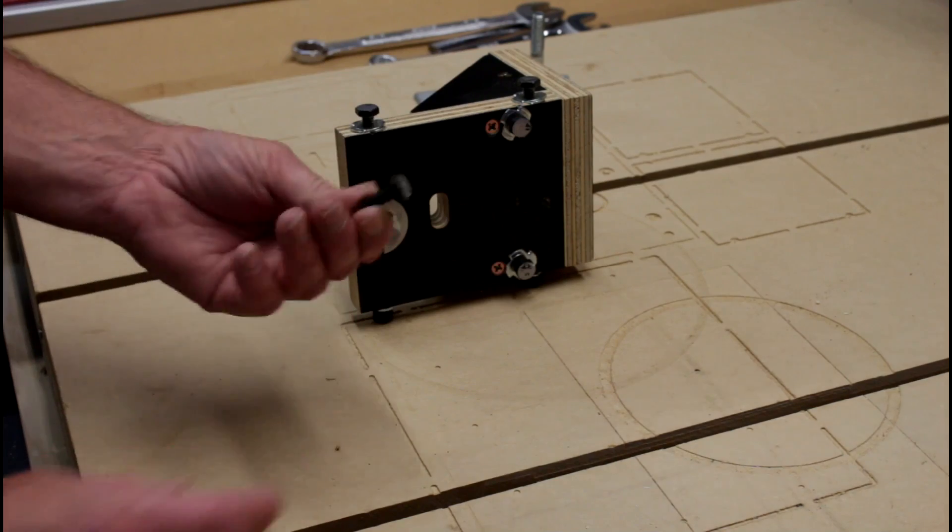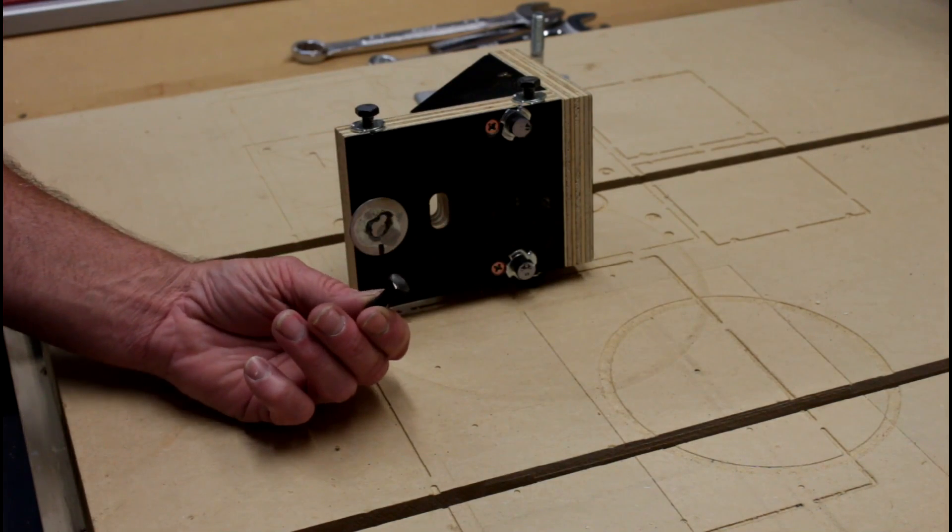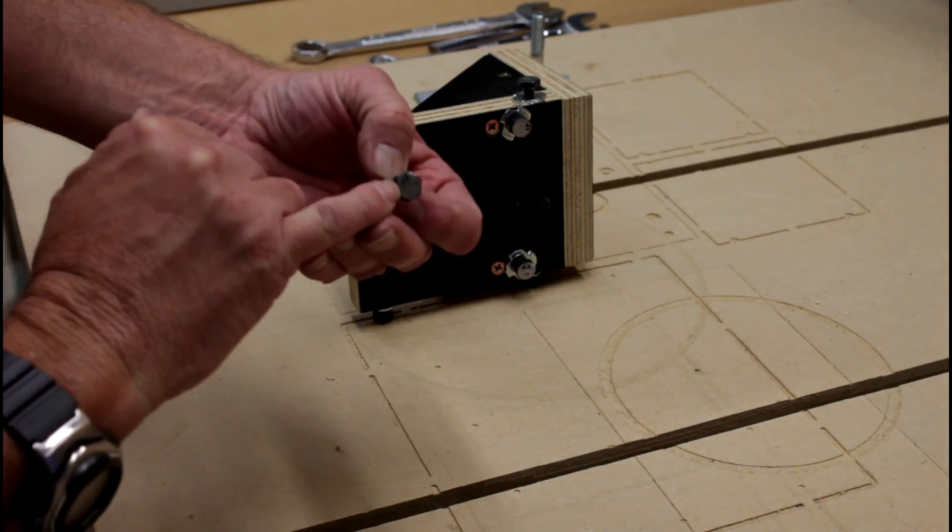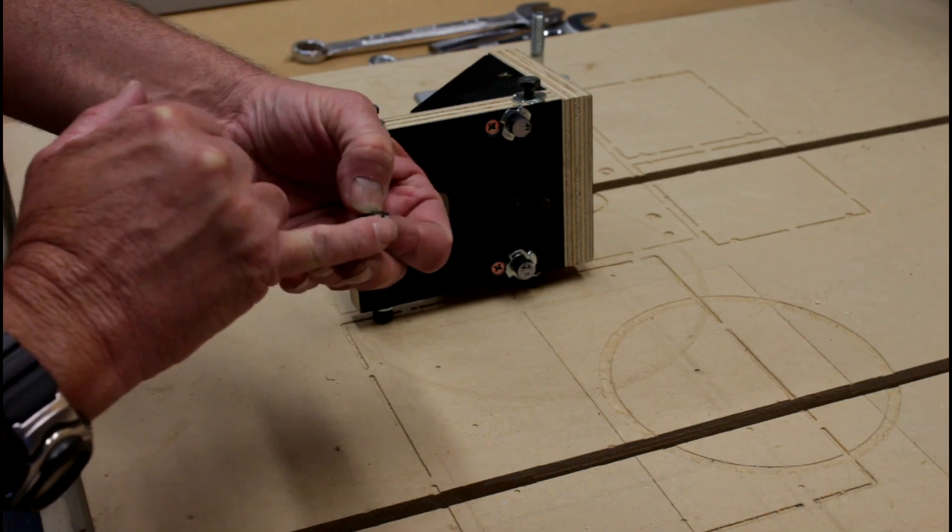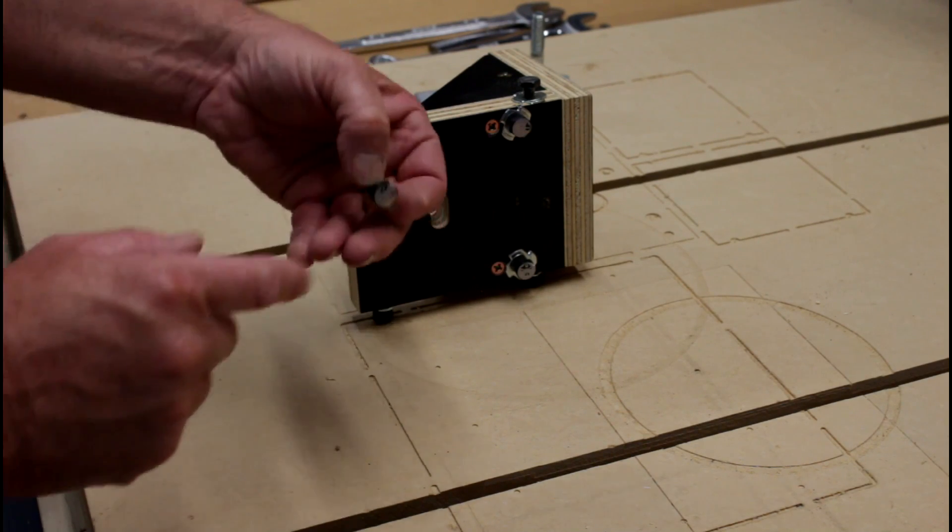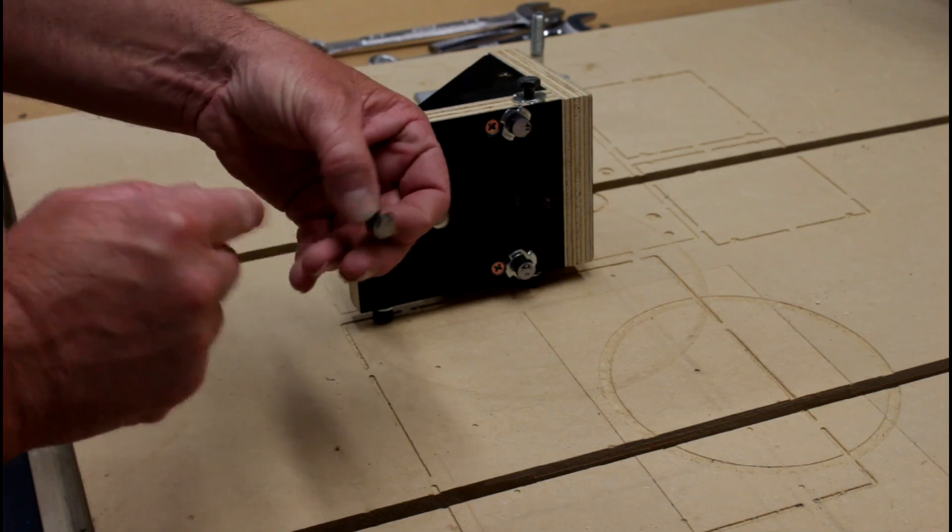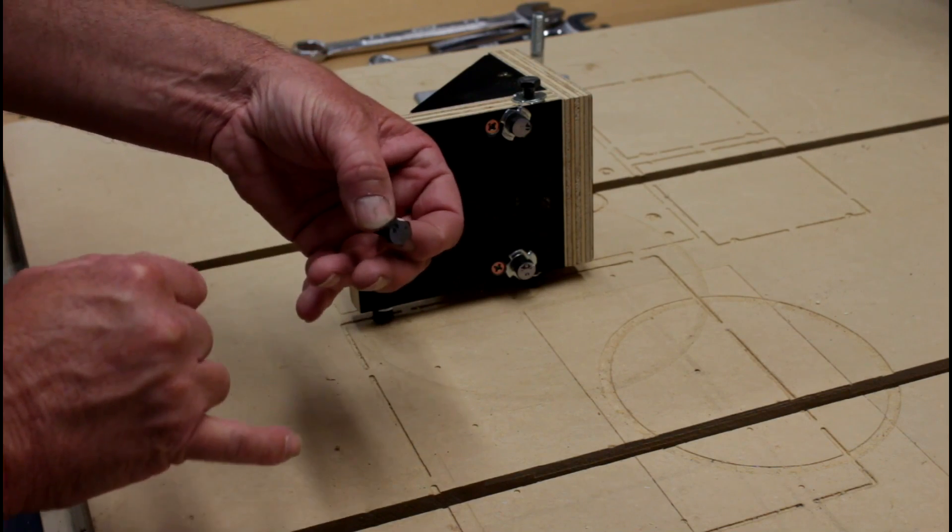Now, these three bolts here are three quarter inch long. It's important that you file or, in my case, I just put it against the sanding disc and just ground that there nice and flat